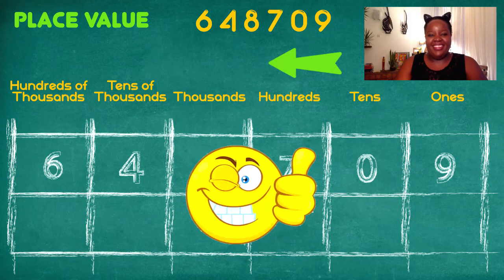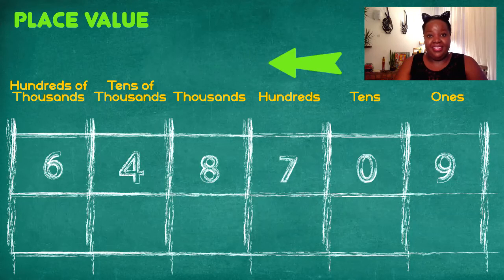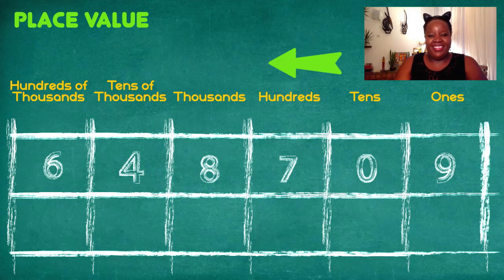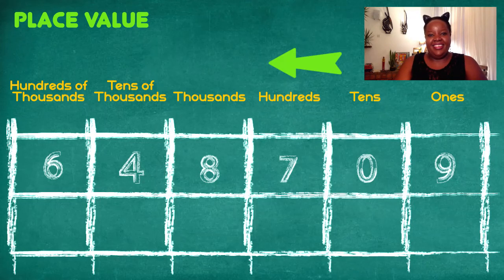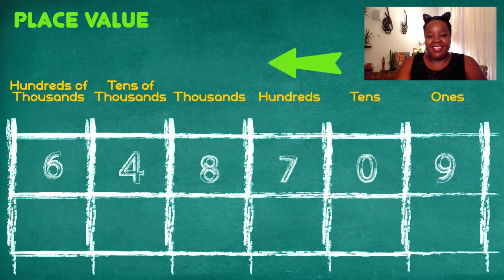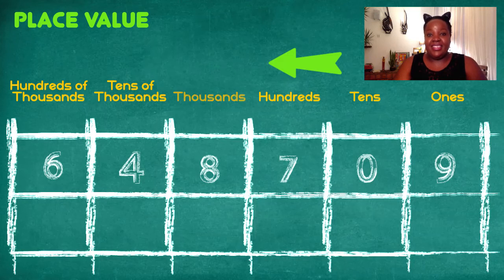Well done — let's try this with another number. Draw your table again: three rows and seven strong, robust columns. Remember when we are putting our numbers in the boxes we always go from right to left. In the first box we have our ones, in the second box our tens, in the third box our hundreds, in the fourth box our thousands, in the fifth box our tens of thousands, and in the sixth box our hundreds of thousands.